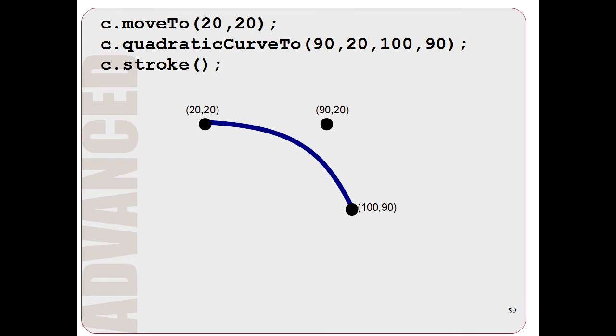Now that you know the process that a computer uses to draw curves, here is the program you have to type to actually get the computer to draw one. First, like a line, you have to give a moveTo command to tell the computer where you want to start drawing your curve.